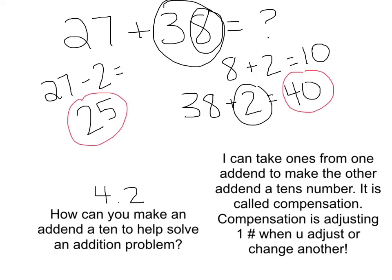The two new addends are going to be 25 and 40. Now we're going to write a new addition sentence to find the sum. 25 plus 40 equals...